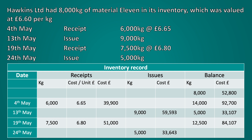To calculate our final balance, it would be the previous balance as at the 19th of May less our issue on the 24th of May — 12,500 kilograms less 5,000 kilograms, giving us a balance of 7,500 kilograms at a valuation of £50,464, because we take the previous £84,107 balance and subtract the issue of £33,643.